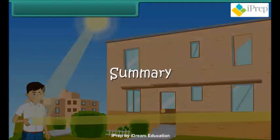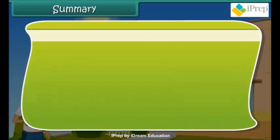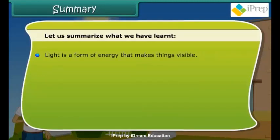Summary: Let us summarize what we have learnt. Light is a form of energy that makes things visible.